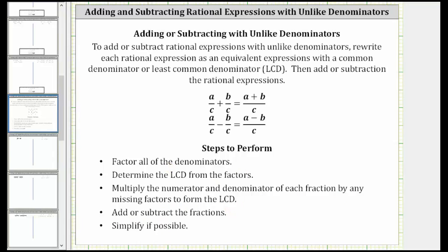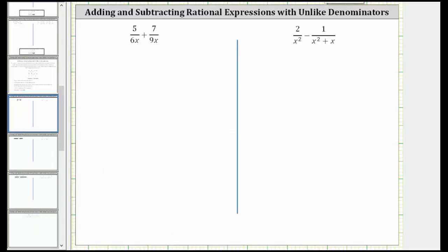Going back to our first example, let's look at the factors of both denominators. For the first fraction we have 5 over 6x — let's write 6x as 2 times 3 times x. And then we have plus 7 over 9x — let's write 9x as 3 times 3 times x.